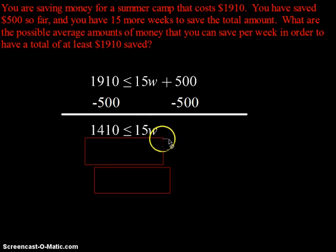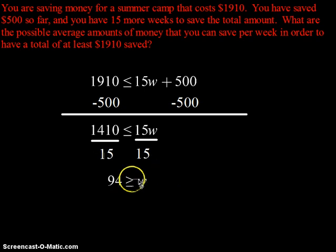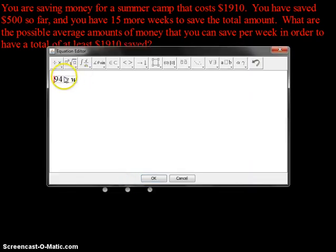If I want it to be an average, that means I need to divide. So let's divide both sides by 15. You're going to find out that every week you need to make an average of $94 or more.